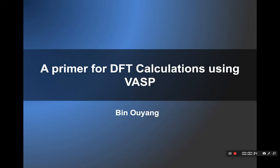Today I'd like to share with you guys my understanding of density functional theory calculations using VASP. Density functional theory is also called DFT. It's a theory to model the electronic states of materials. And VASP is actually the most popular software for doing DFT calculations, especially for solid materials. So today in this video, I'd like to give you a brief tutorial about how to do DFT calculations using VASP and what exactly DFT calculations are. Alright, let's get started.